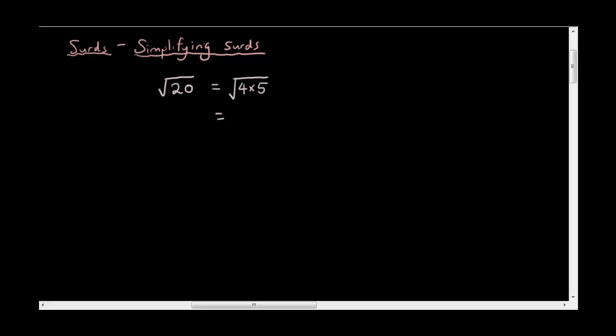Now I can utilize the rule: square root of a times square root of b equals square root of ab. So I can separate these two numbers out into separate surds. If you have seen my first surds video, you'll understand the reasoning behind this rule. Then the square root of 4 is just equal to 2, so I can rewrite it as 2 times the square root of 5. That is successfully simplified, and you can see that the number inside, which is 5, cannot be simplified any further, because you can't find two numbers that multiply to give you 5 where one is a square number.